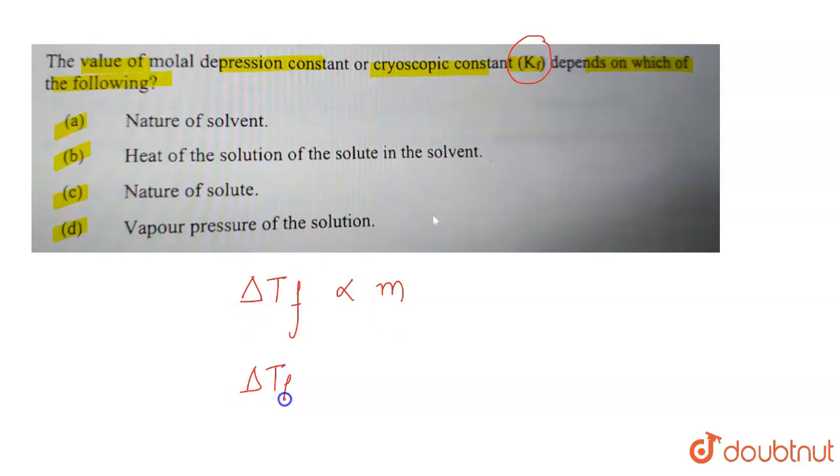When we remove the sign of proportionality, Delta Tf represents the depression in freezing point. Whenever a non-volatile solute is added to a pure solvent, it leads to a depression in the freezing point. And this is equal to Kf into M.